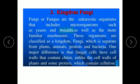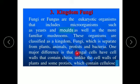Kingdom Fungi consists of eukaryotic organisms which include microorganisms such as yeasts and molds, as well as the more familiar mushrooms. These organisms are classified as kingdom Fungi, which is separate from plants, animals, Protists, and bacteria. One major difference is that fungal cells have cell walls that contain chitin, unlike the cell walls of plants and some Protists which contain cellulose.